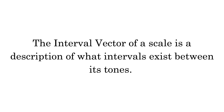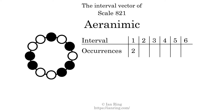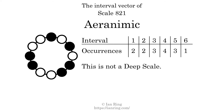The interval vector of a scale is a description of what intervals exist between its tones. There are 2 intervals of 1 semitone, 2 intervals of 2 semitones, 3 intervals of 3 semitones, 4 intervals of 4 semitones, 3 intervals of 5 semitones, and 1 interval of 6 semitones. Each interval does not appear in this scale a unique number of times, so this is not a deep scale.